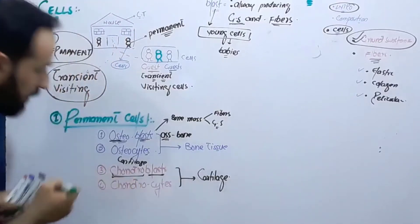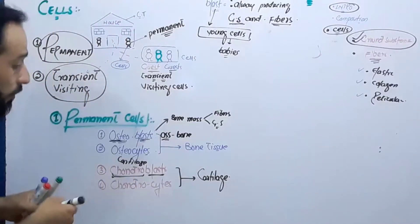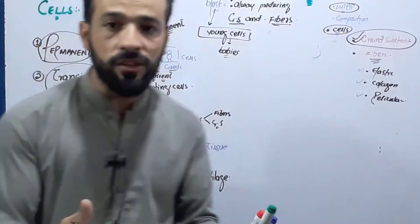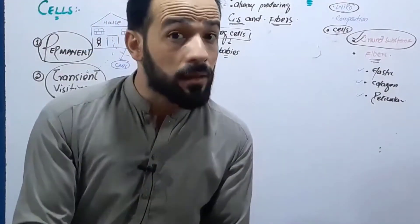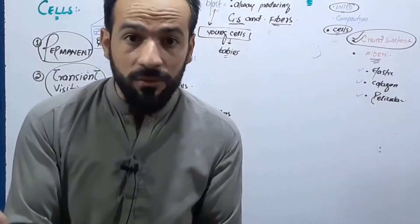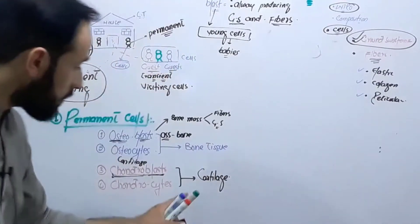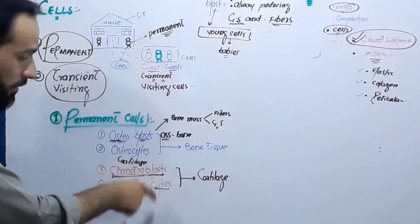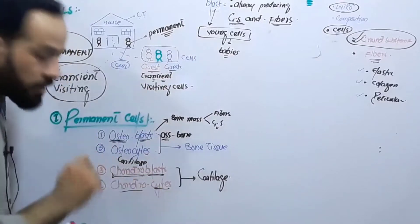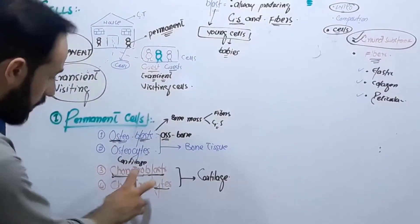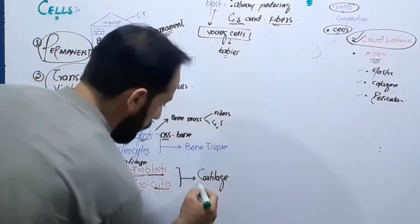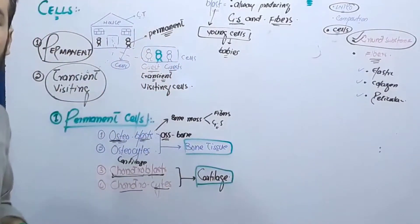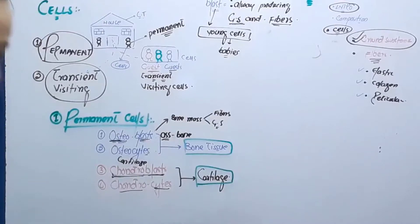These are the chondroblast cells, and when the chondroblast cells become mature, they lose the capability of producing the fibers and ground substance of the cartilage connective tissue — they become chondrocytes. So chondroblasts and chondrocytes are the cells of the cartilage. The next type of connective tissue found in our body is cartilage, which is also a connective tissue.